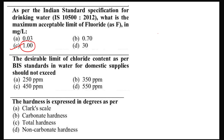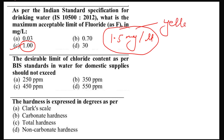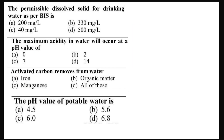Because the fluoride content is not within limits, the water causes dental cavity issues. The fluoride content limit is greater than 1.5 mg per liter. The desirable limit of chloride content as per Bureau of Indian Standards for water for domestic supply should not exceed 250 ppm, meaning 250 mg per liter. Hardness is expressed in degrees as per the calcium carbonate scale.